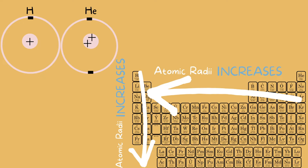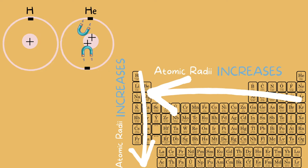Remember, we learned that the more protons an atom has, the stronger it will have a hold on the electrons. The more protons create even more magnetic power that pulls these electrons towards the nucleus, creating a more compact and smaller atom. Versus a hydrogen atom that only has one proton — it will have less of a pull on the electron.